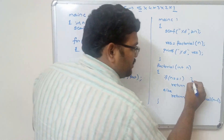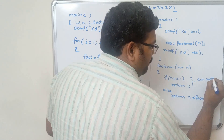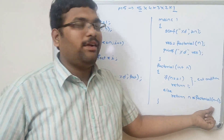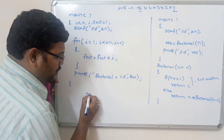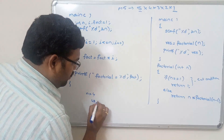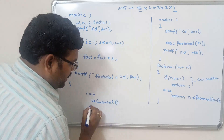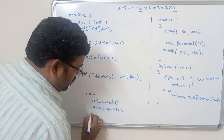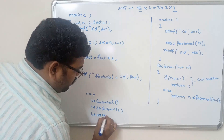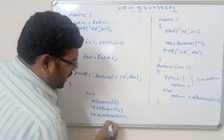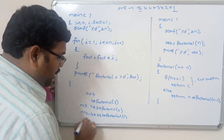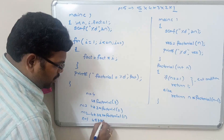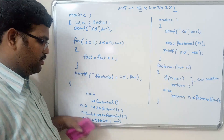Here, 'if n == 1, return 1' is the exit condition. If n is not equal to 1, return n * factorial(n - 1). In the first iteration, if n = 4, we get 4 * factorial(3). Next iteration: 4 * 3 * factorial(2). Next: 4 * 3 * 2 * factorial(1). Now n = 1, so we return 1. So we get 4 * 3 * 2 * 1 = 24.